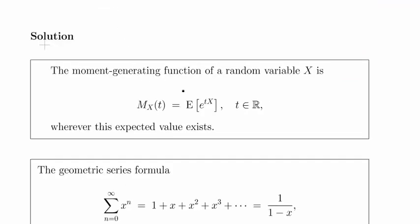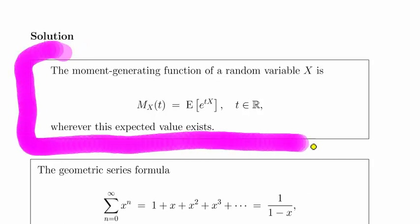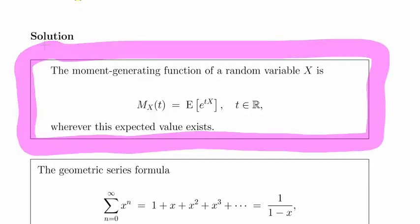So, this is the definition of the moment generating function. This is the key thing to start off with here. Essentially what we have here is E, the expected value of the exponential of t times X. So that's the key part there.